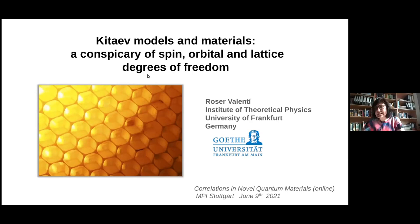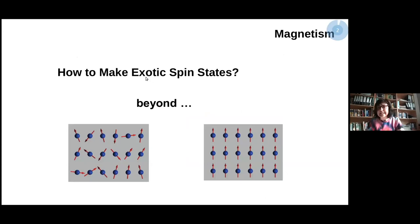In my title, I say the conspiracy of spin, orbital, and lattice degrees of freedom. What I want to show you is that in these kinds of systems or physics, these three types of degrees of freedom are very much intertwined. I would like to start with a motivation for why we are studying this type of model and materials.